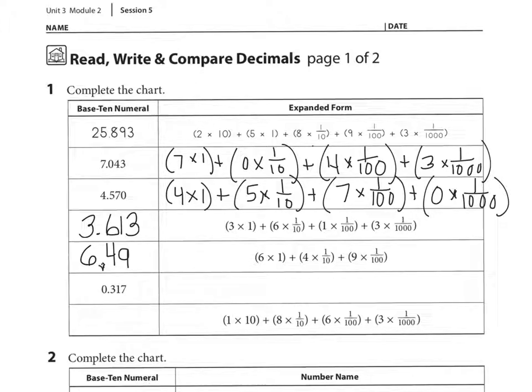The next one, we're going to go back to writing it in expanded form. So we're going to see that it's 0 and 317,000ths. And so we're going to say 3 times 1 tenth plus 1 times 1 hundredth, plus 7 times 1,000th.